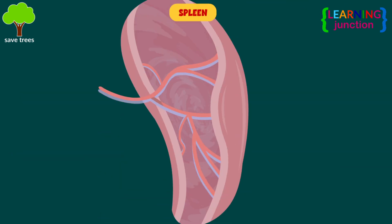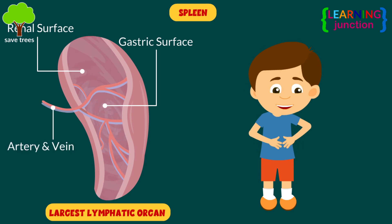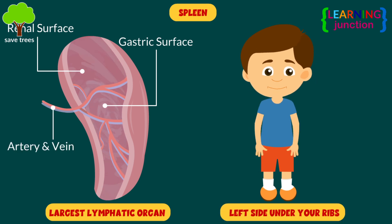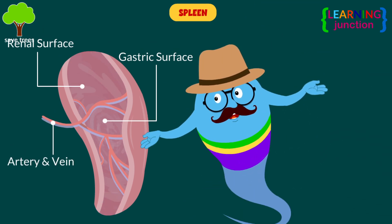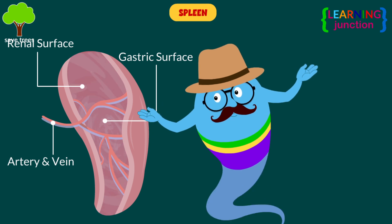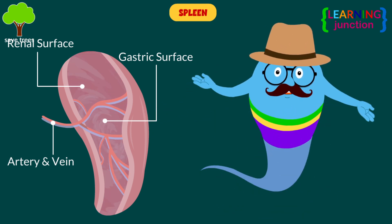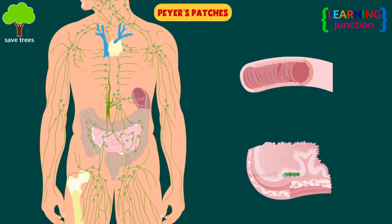Spleen: this largest lymphatic organ is located on your left side under your ribs. The spleen filters and stores blood and produces white blood cells.